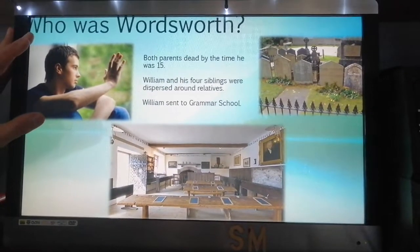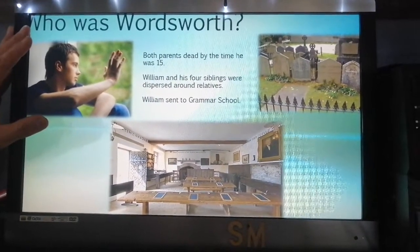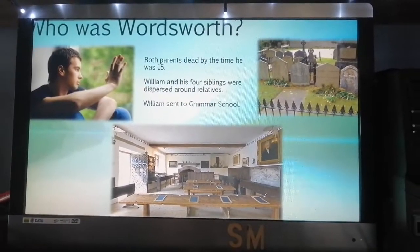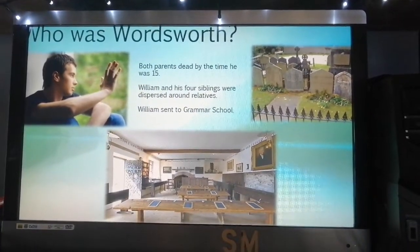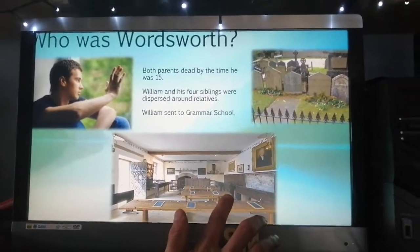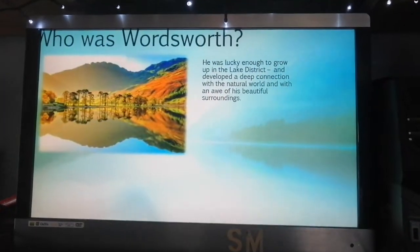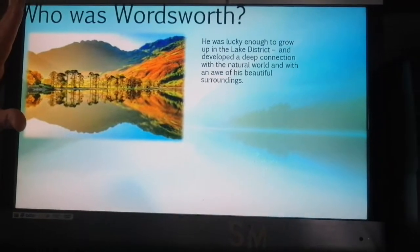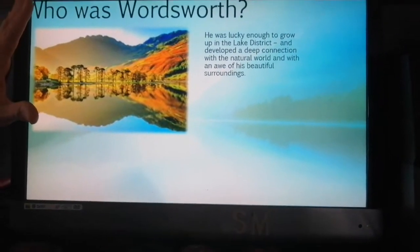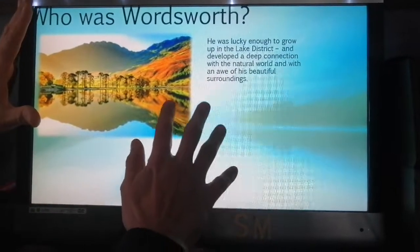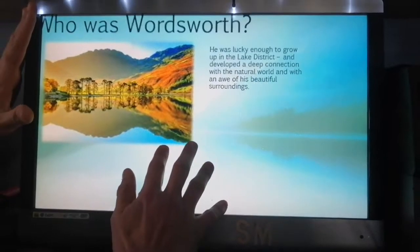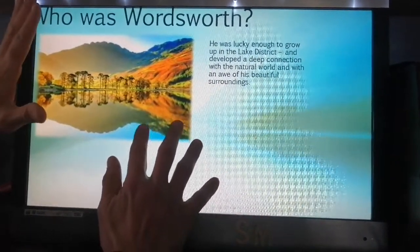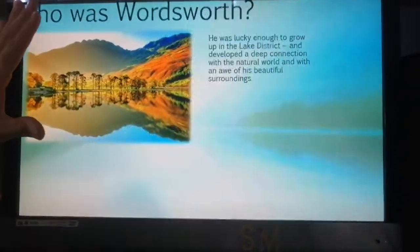Sadly, by the time he was your age, both of his parents were dead and buried, and William and his four siblings were dispersed around relatives. William himself was sent off to grammar school, as you might expect from somebody of his class. Key to understanding this poem and even Romanticism itself is the fact that Wordsworth was lucky enough to grow up in the Lake District and developed a very deep and profound connection with the natural world and an awe of his beautiful surroundings.